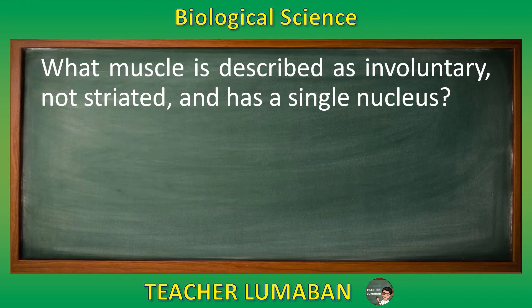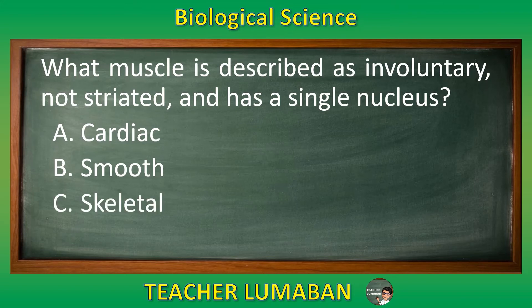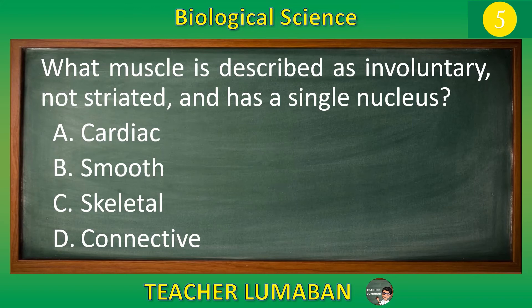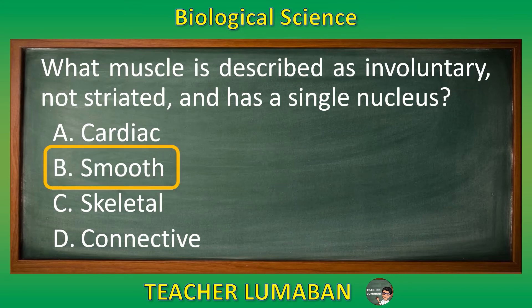Letter A: cardiac. Letter B: smooth. Letter C: skeletal. Letter D: connective. Choose the suitable answer based on the given choices in 5 seconds. 5, 4, 3, 2, 1. The correct answer is Letter B, smooth. The smooth muscle is described as involuntary, not striated, and has a single nucleus.